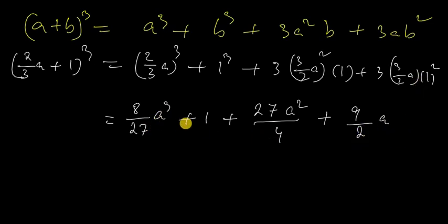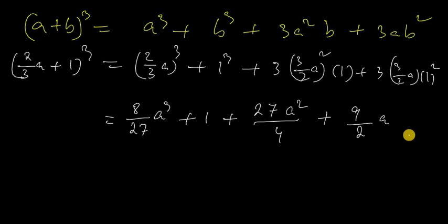The final answer is: 8 by 27 A cubed plus 1 plus 27 A squared by 4 plus 9 by 2 A. That is the answer.